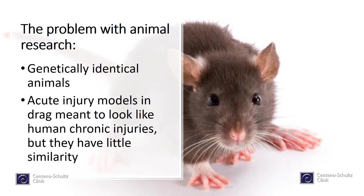One of the big problems right now in stem cells is we have a lot of great animal models that seem to show that stem cells do amazing things — regrow cartilage, regrow discs, etc. But when we get into patients, a lot of times those results don't translate. That's primarily because there's a big difference between genetically identical animals with artificially created injuries versus the real deal in patients.